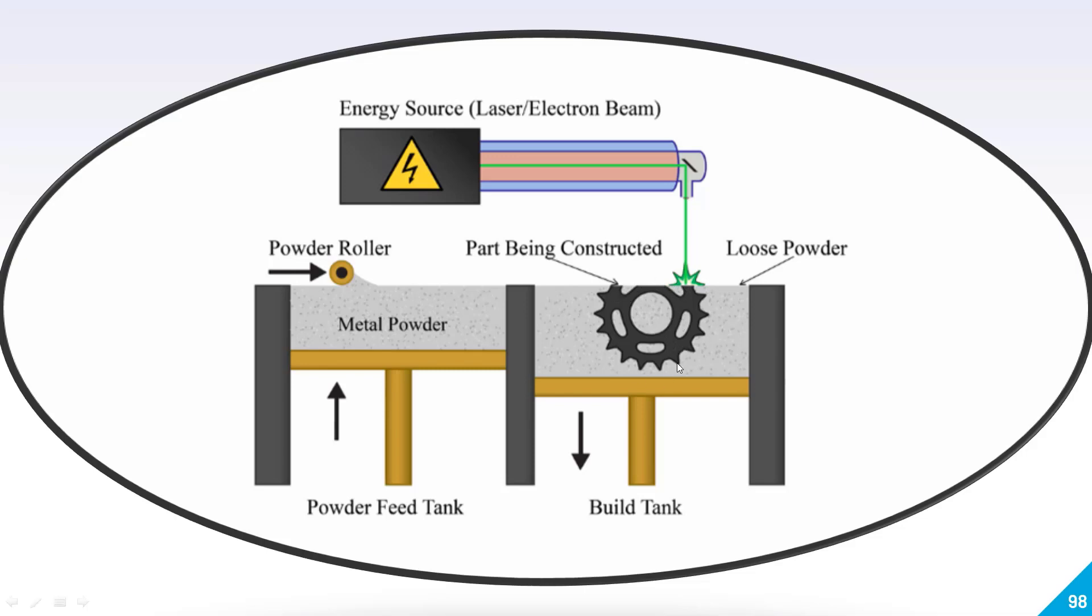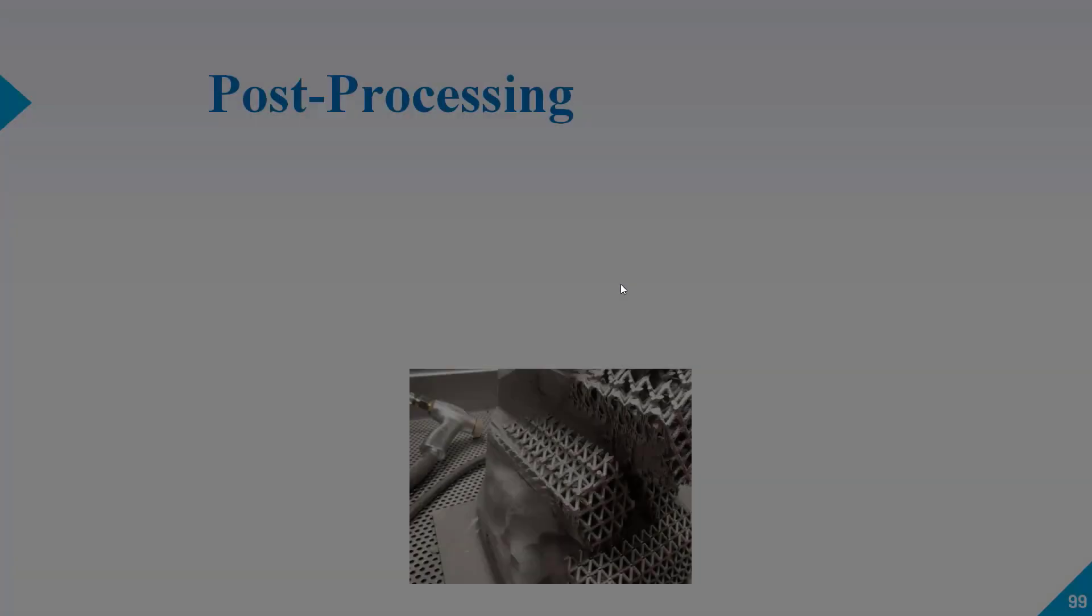Once your laser inserts the powder, this will convert into a solid. Then this build platform will go down and this metal powder feed tank will go upside one layer, and this powder roller will again roll the powder to your build tank. This is how this whole process works.